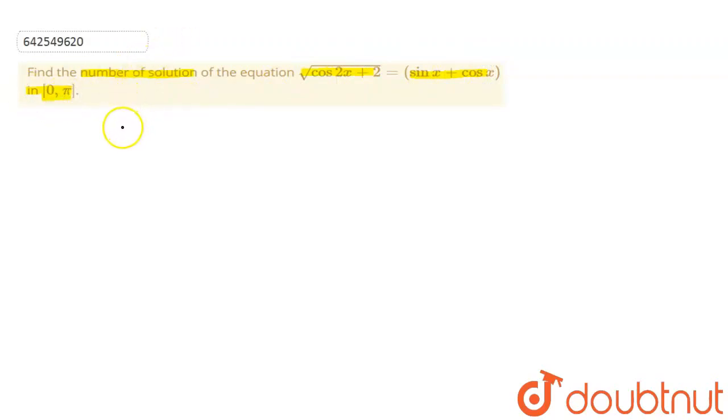So, we have this equation: square root of cos 2x plus 2 equals sin x plus cos x. Correct?